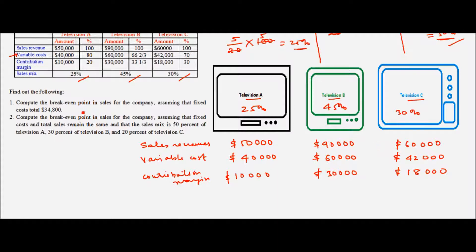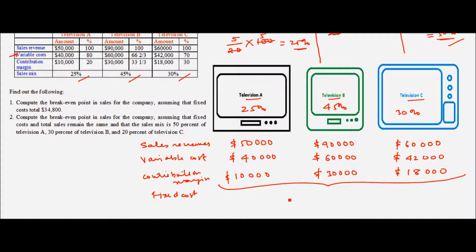First, we have to find out the break-even point in sales assuming that the fixed cost totals $34,800. In order to manufacture these televisions, there are fixed costs like the manufacturing facility being used as a factory. The total fixed cost for all three has been given as $34,800. The break-even point means how much sales should the company do in order to have a no-profit, no-loss situation.